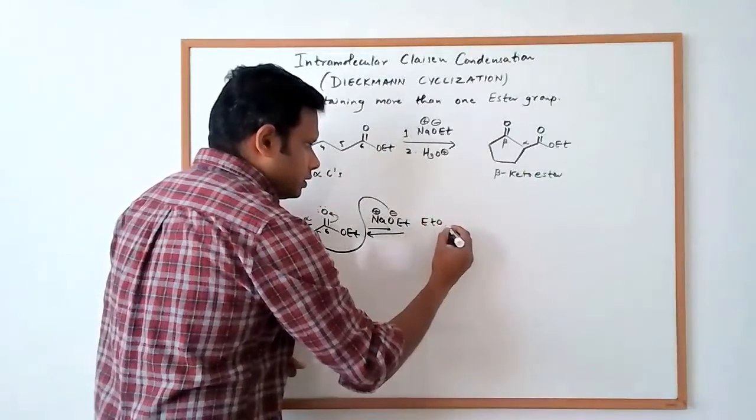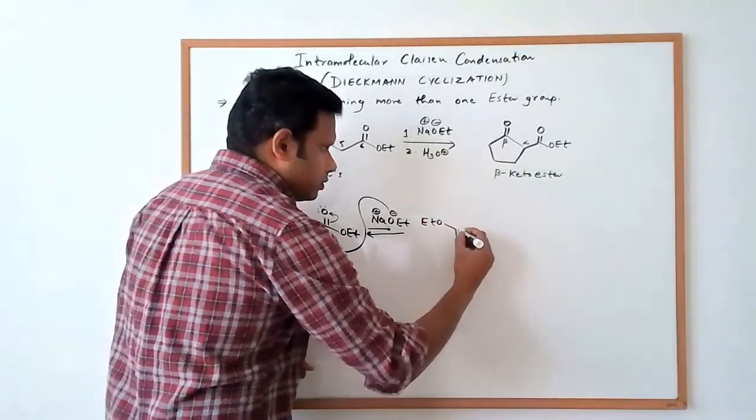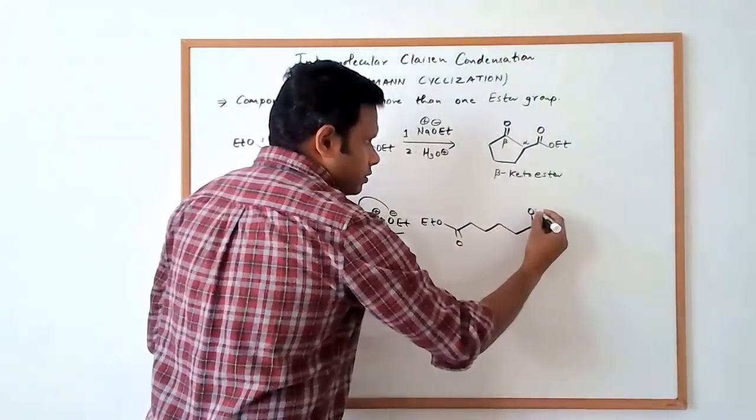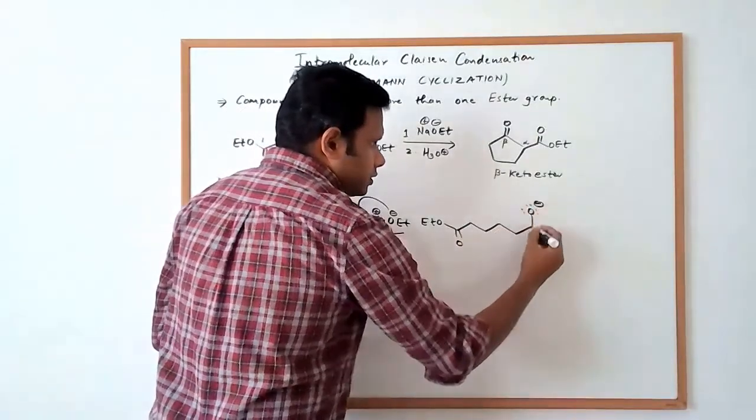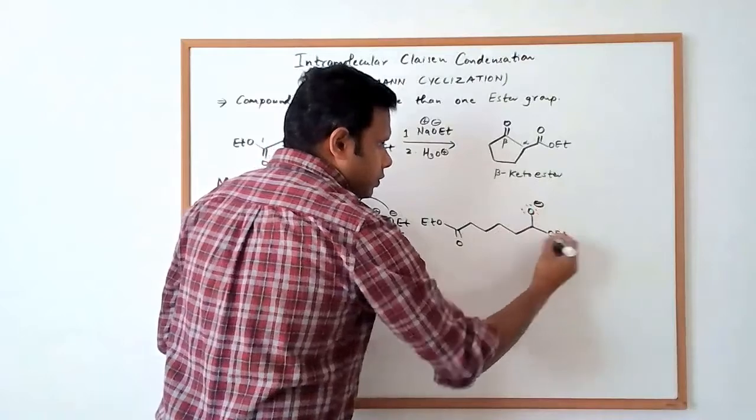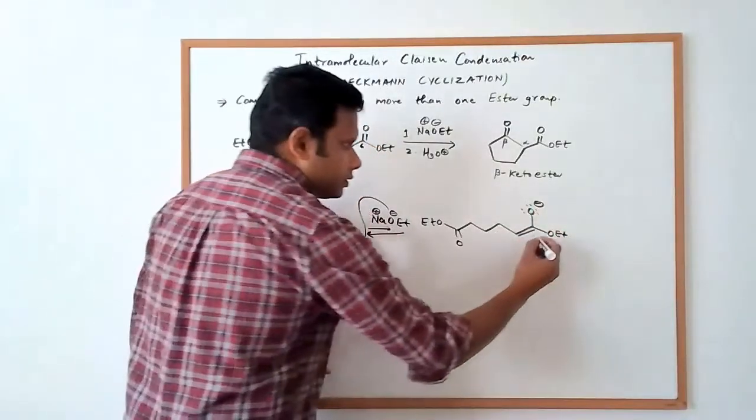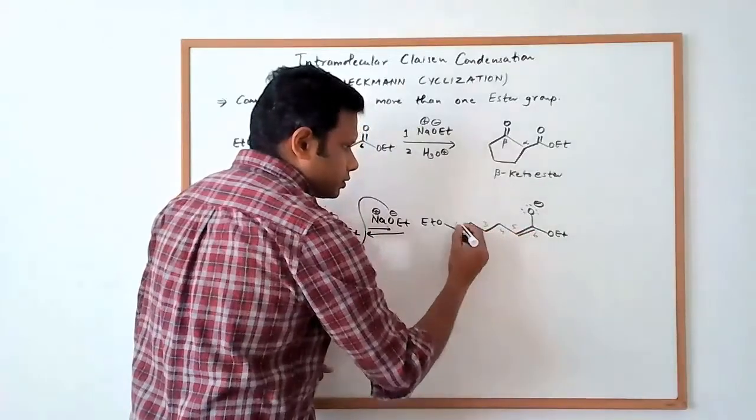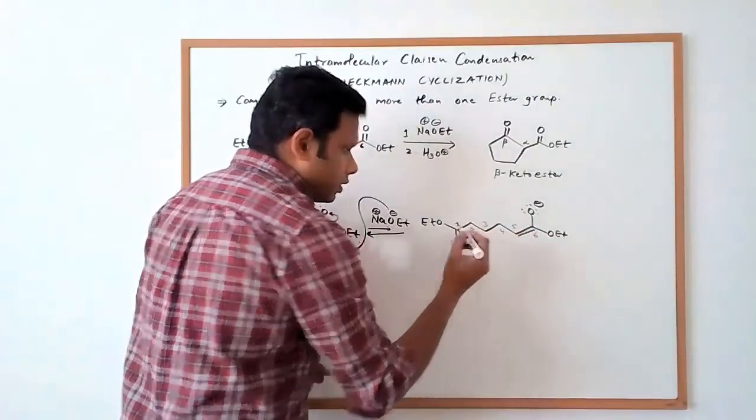And that would give us the enolate, which is this molecule here. 4, 5, 6, single bond, oxygen with a negative charge, OEt, double bond there. So that's 6, 5, 4, 3, 2, and then 1.